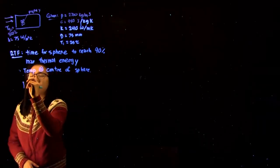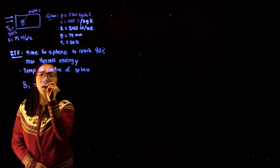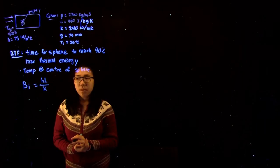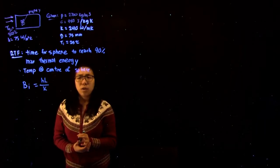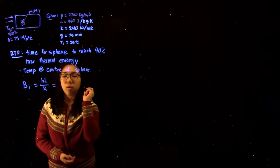So we want to check that the Biot number is hL over K, but the L is a characteristic length, which is equal to the volume over the surface area. So for a sphere, this is equal to R over 3.